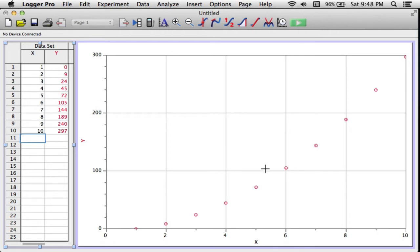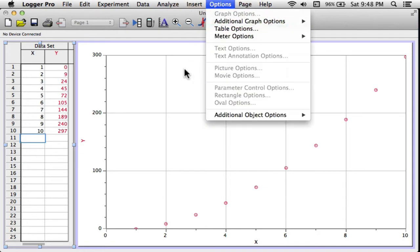First off, if it's hard seeing the data, I can do a couple things with this. I can actually make all the points get connected, so it looks a little bit more like a curve. I'm just going to go to the options menu and go down to where it says graph options.